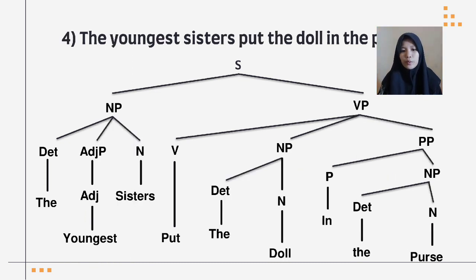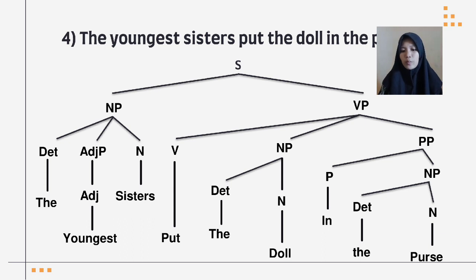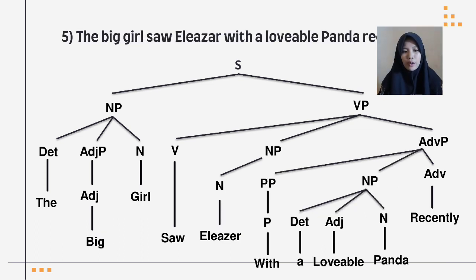Number four: 'The youngest sister put the doll in the purse.' The sentence is broken into two parts: a noun phrase and a verb phrase. The noun phrase is broken into three parts: a determiner 'the,' an adjective phrase containing adjective 'youngest,' and a noun 'sister.' The verb phrase is broken into a verb 'put,' a noun phrase, and a prepositional phrase. The noun phrase contains a determiner 'the' and a noun 'doll.' The prepositional phrase contains a preposition 'in' and a noun phrase with a determiner 'the' and a noun 'purse.'